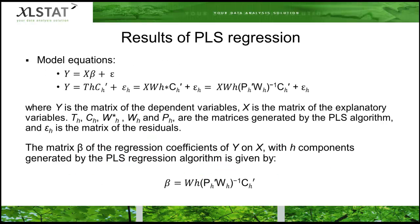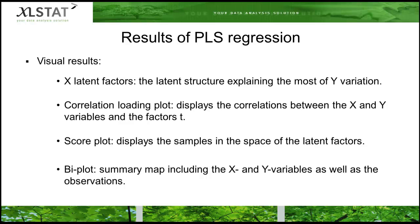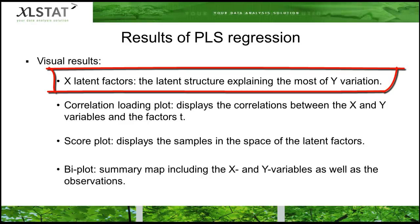The first results of the partial least squares regression are the model equation showing the beta coefficients that give the relationship between the x and y variables. There are also some visual results that facilitate the interpretation of the findings. First, the x latent factors represent the latent structure which explains the most variation in y. This is remarkably useful when dealing with signals such as spectra.